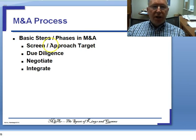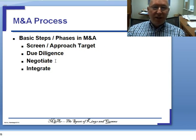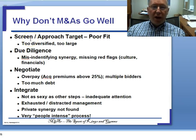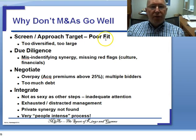The basic steps in the process: screening and approaching the target; due diligence, where you check out what the company really is — using my dating analogy, this is where you identify the person you want to date because they look smart and attractive, and due diligence is where you actually get to know them better; then negotiation, where you figure out the terms of the deal; the deal happens; and then integration, where the two shall become one.